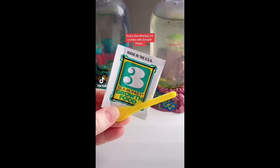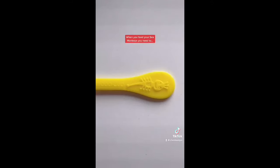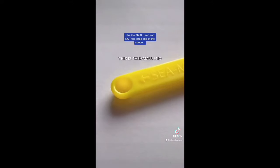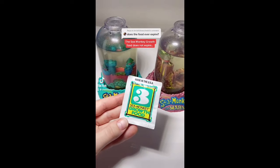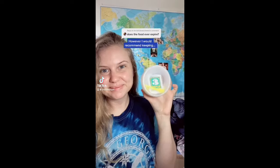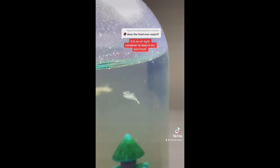Every sea monkey kit comes with grow food and the sea monkeys feeding spoon. When you feed your sea monkeys you need to use the small end and not the large end of the spoon. If you use the large end it will overfeed your sea monkeys and they will suffocate and die. Sea monkey grow food does not expire. However, I would recommend keeping it in an airtight container to keep it dry and fresh.